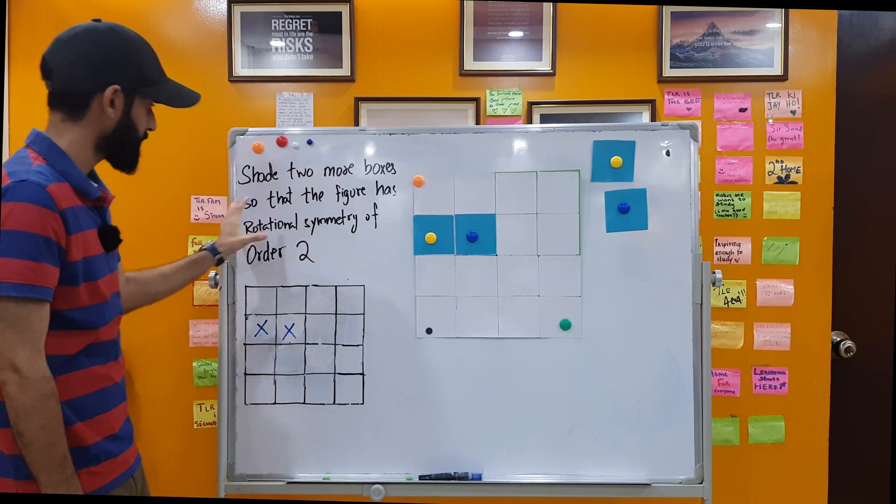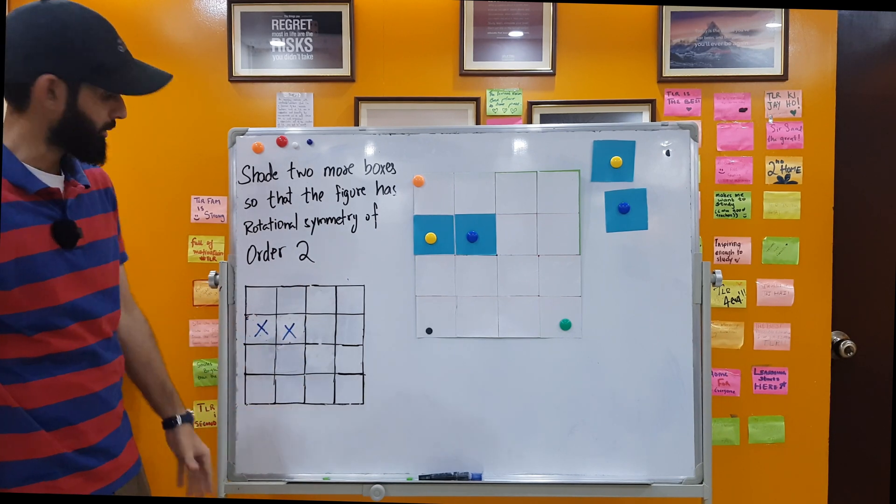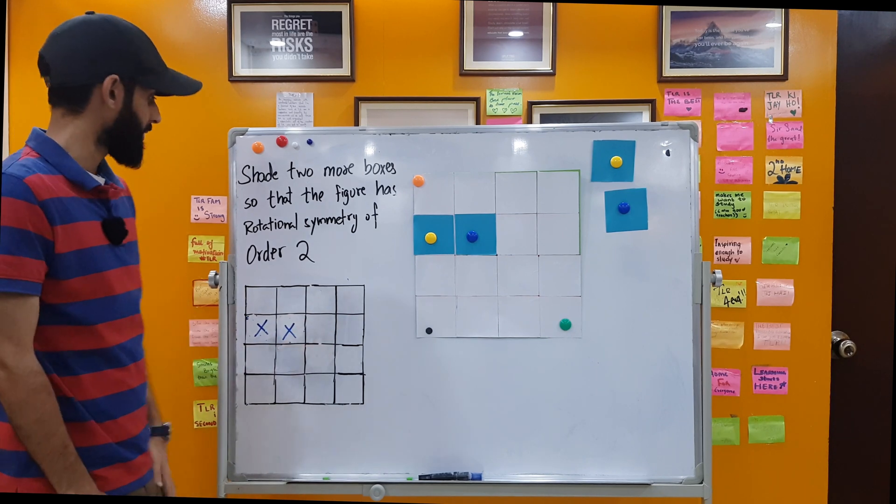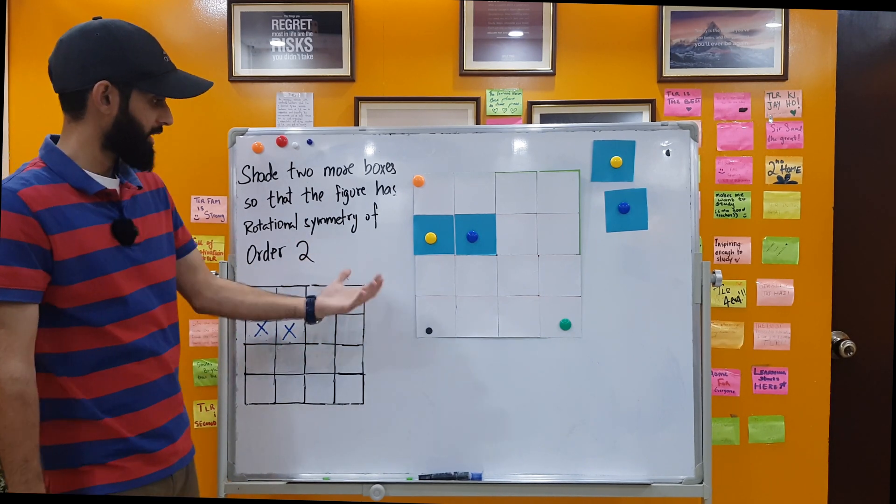Now here's a question that I've written in which we have to shade two more boxes so that the figure has rotational symmetry of order 2. These two are the boxes that are originally shaded. Now we have to shade two more.